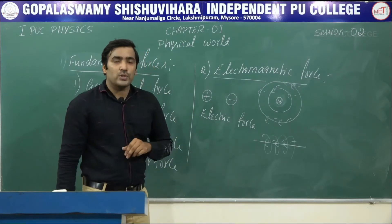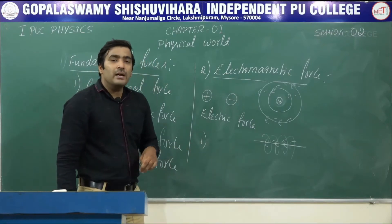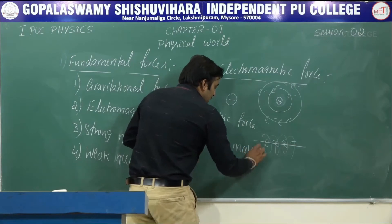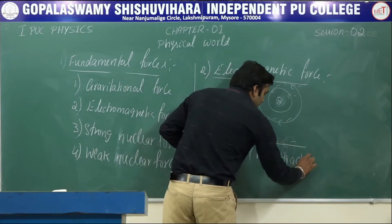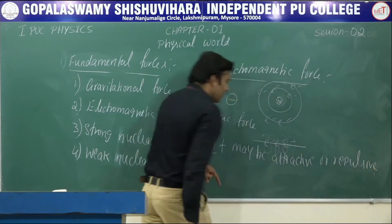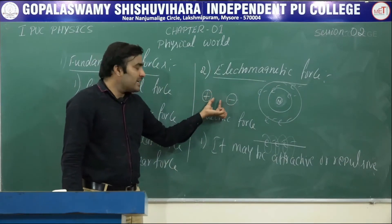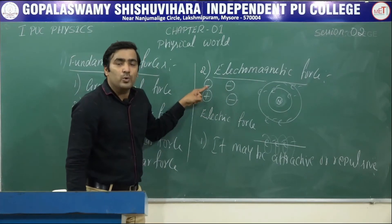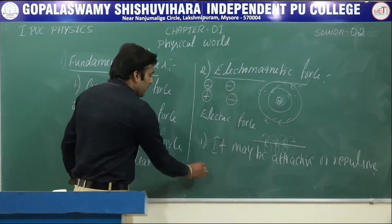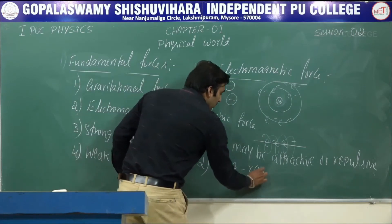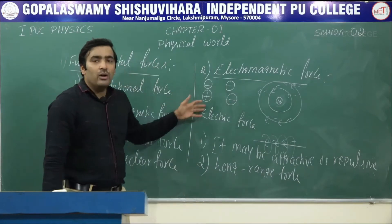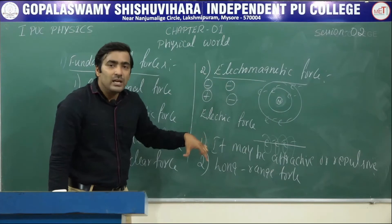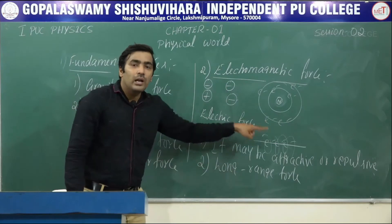The characteristics of electromagnetic force: it can be either attractive or repulsive depending on the nature of the charges. If we have two opposite charges, there is attraction; if we take two same charges, there is repulsion. Secondly, this force is also a long-range force — it can act up to a very far distance.